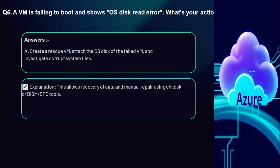Question 5: A VM is failing to boot and shows an OS disk read error — what's your action? Create a rescue VM, attach the OS disk of the failed VM, and investigate corrupt system files. A rescue VM allows recovery of data and manual repair using tools like chkdsk, DISM, or SFC.